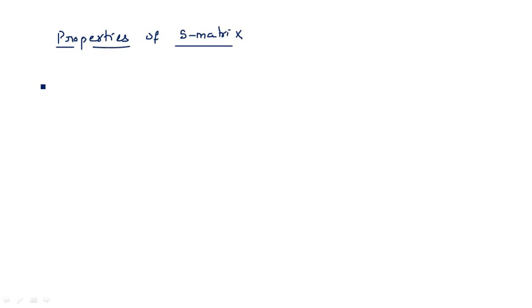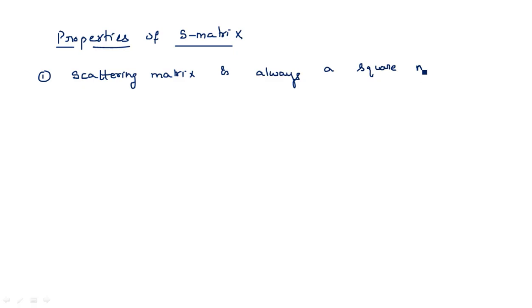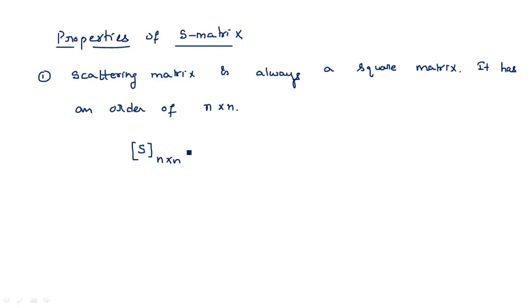Properties of S matrix. First property: the scattering matrix is always a square matrix with an order of n by n. So S is of order n×n, meaning it has elements S11, S12, S13, and so on up to S1n.